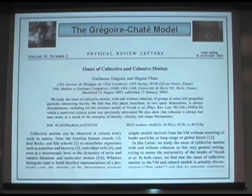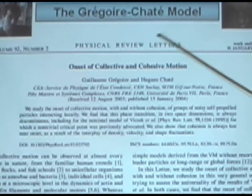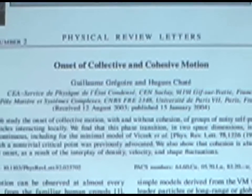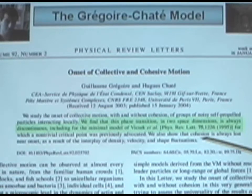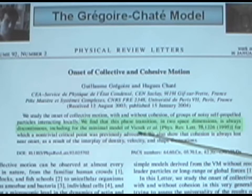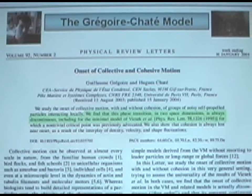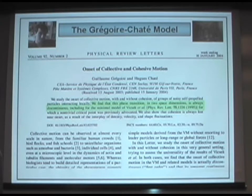Ten years after that, this paper came out in Physical Review Letters, written by Grégoire and Chaté, and they claim that the phase transition is always discontinuous, including the Vicsek model. There is a difference between the continuous phase transition and the discontinuous phase transition. Everything changes: the correlations, the susceptibility, the heat capacity. All the properties of the system are quite different.